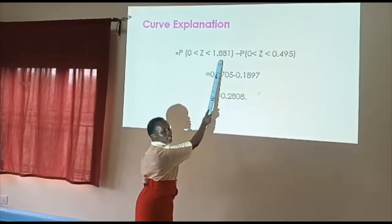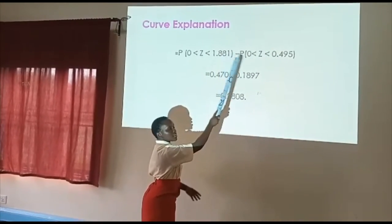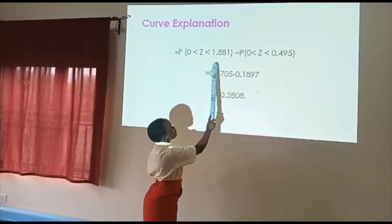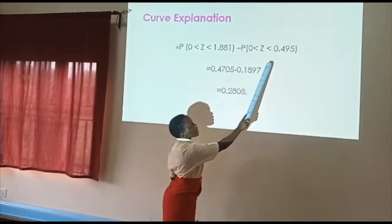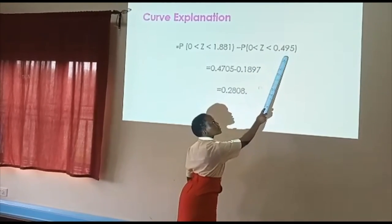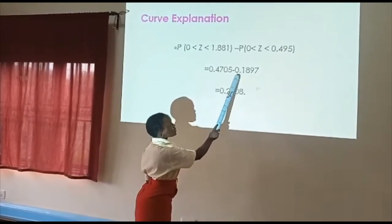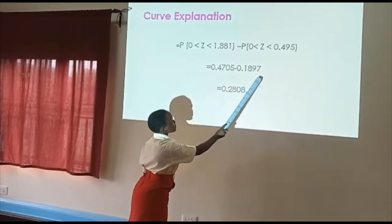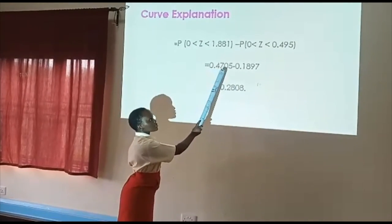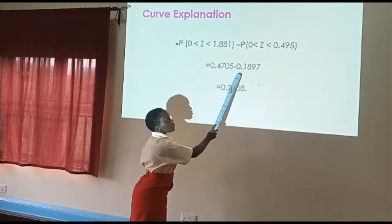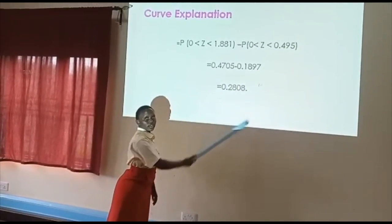I will read between 0 and 1.881 and subtract what is between 0 and 0.495 as explained earlier. I read 1.8 under 8, then add from the additional table what's under 1 to get 0.4705. Then for here, I will read 0.4 under 9, then add what's under 5 in the additional table to get 0.1897. So I will subtract 0.4705 minus 0.1897 to give me the final answer of 0.2808.